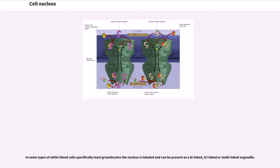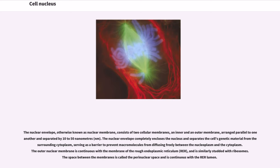In some types of white blood cells, specifically most granulocytes, the nucleus is lobated and can be present as a bilobed, trilobed or multilobed organelle. The nuclear envelope, otherwise known as nuclear membrane, consists of two cellular membranes, an inner and an outer membrane, arranged parallel to one another and separated by 10 to 50 nanometers. The nuclear envelope completely encloses the nucleus and separates the cell's genetic material from the surrounding cytoplasm, serving as a barrier to prevent macromolecules from diffusing freely between the nucleoplasm and the cytoplasm. The outer nuclear membrane is continuous with the membrane of the rough endoplasmic reticulum, RER, and is similarly studded with ribosomes. The space between the membranes is called the perinuclear space and is continuous with the ER lumen.